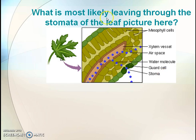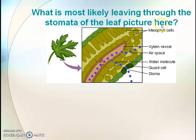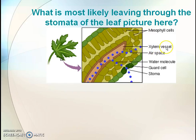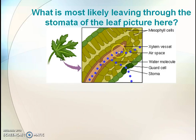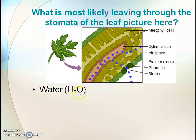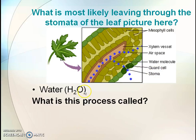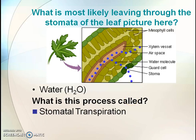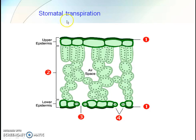Most water is lost through the stomata of the leaf, as shown in the picture here. Here is a mesophyll cell. This is the centrally located xylem. These blue dots are the water molecules evaporating from the guard cell. This process is called stomatal transpiration.